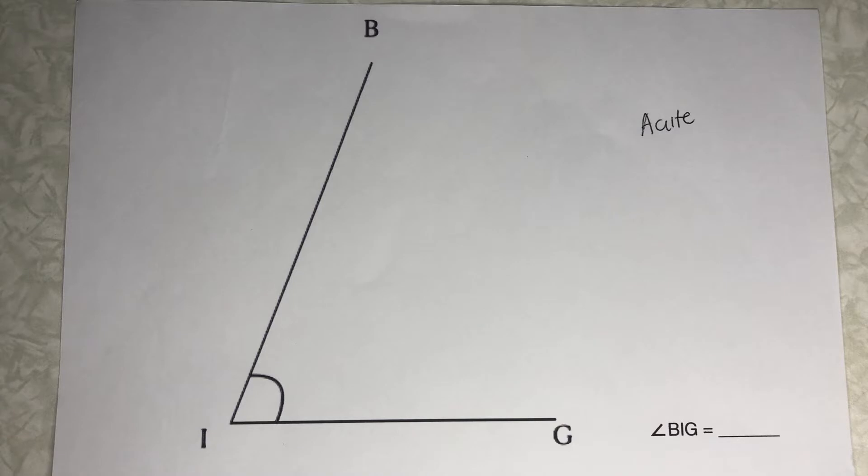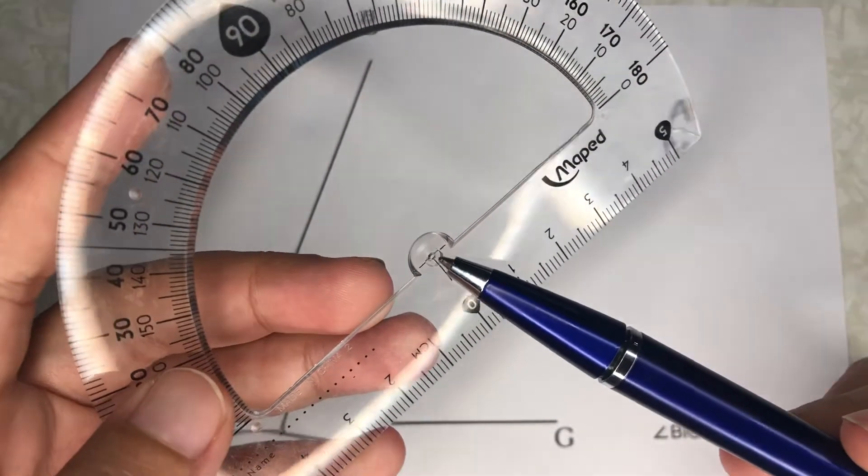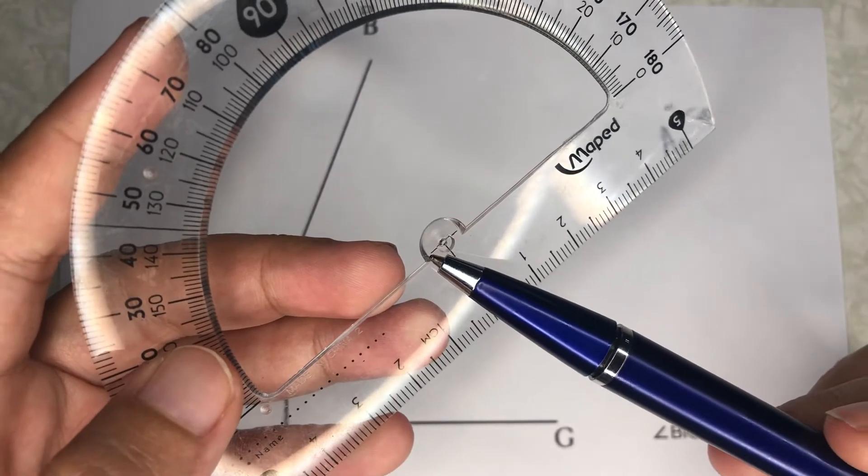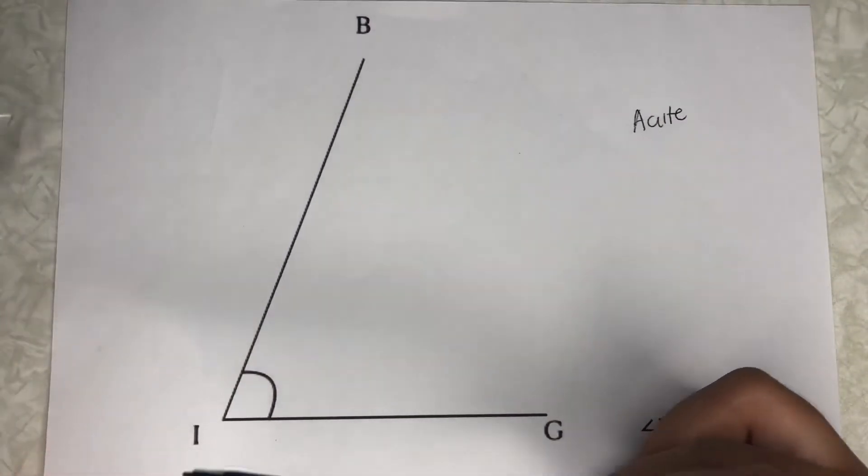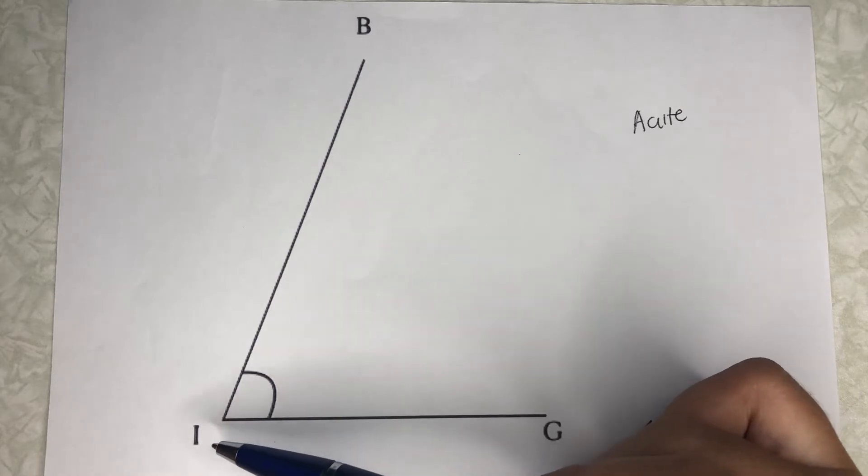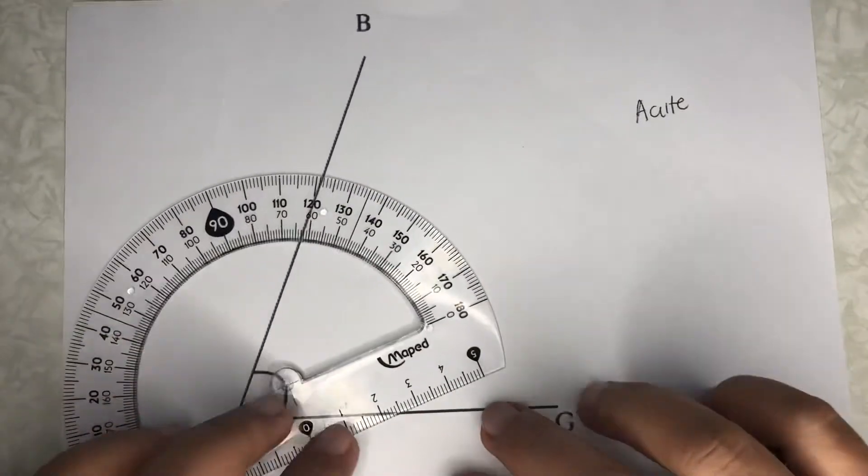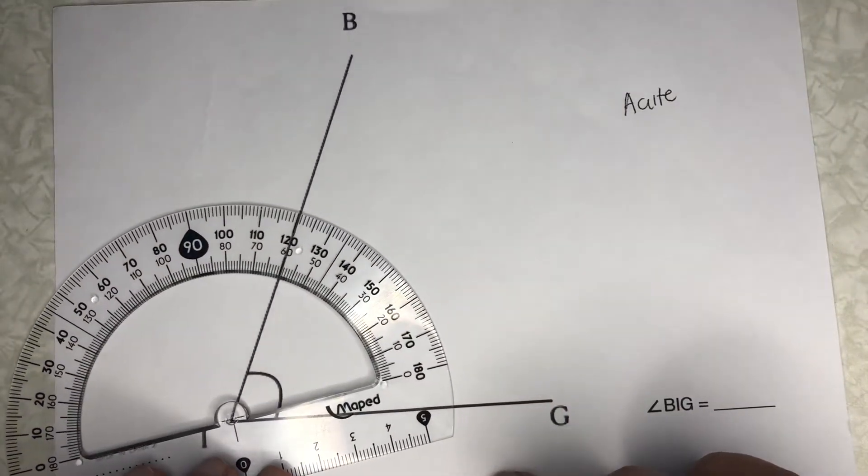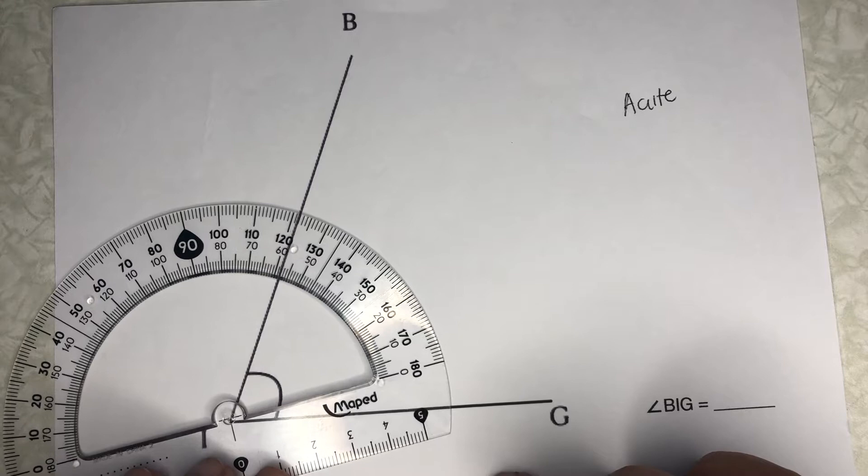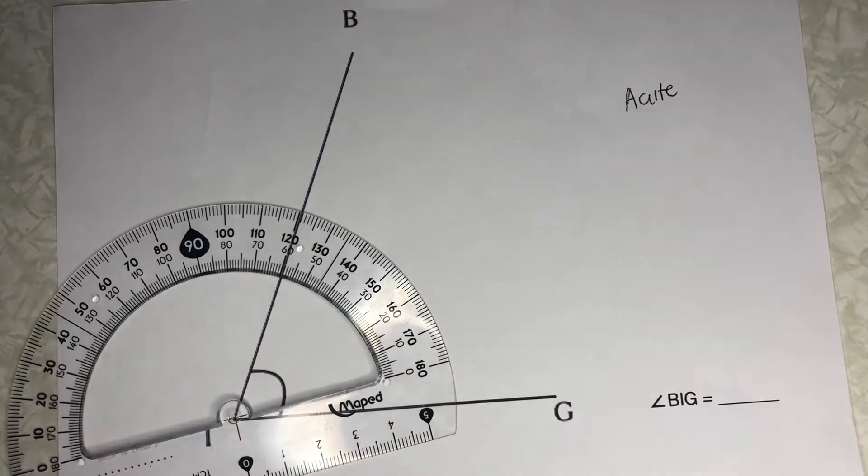First step is to put the center mark of the protractor on the vertex. The vertex is where the two angles meet, so the vertex here is point I. Let me now put the center mark on top of vertex I. There you go.